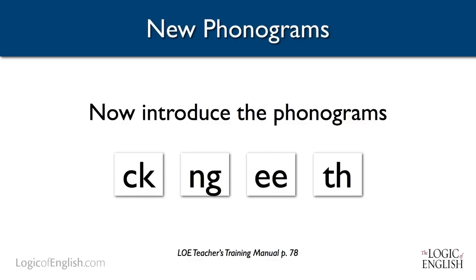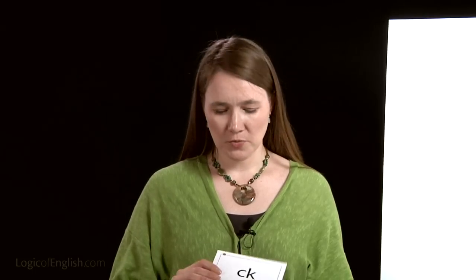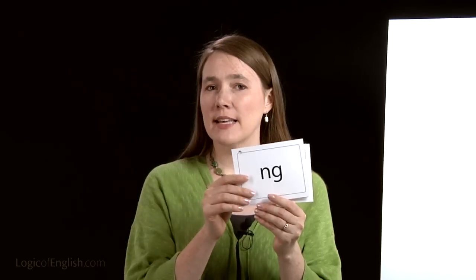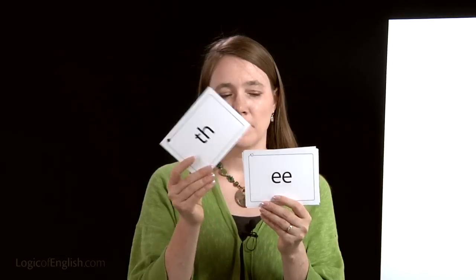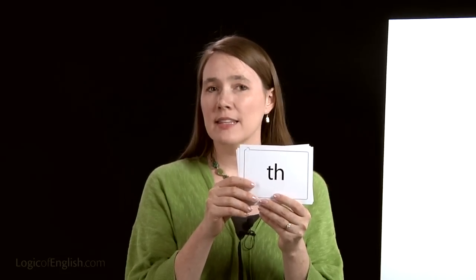Now that we've introduced the A through Z phonograms, we're ready to begin to learn some of the multiletter phonograms. The first one I'll teach you today is the two-letter K, which says 'mmm' — this is E-E, double E. When teaching the multiletter phonograms, it really doesn't matter which order you place them in. In Logic of English Essentials and Foundations, we've chosen an order that makes sense based on the words we wanted to teach, but you could teach them in any order.